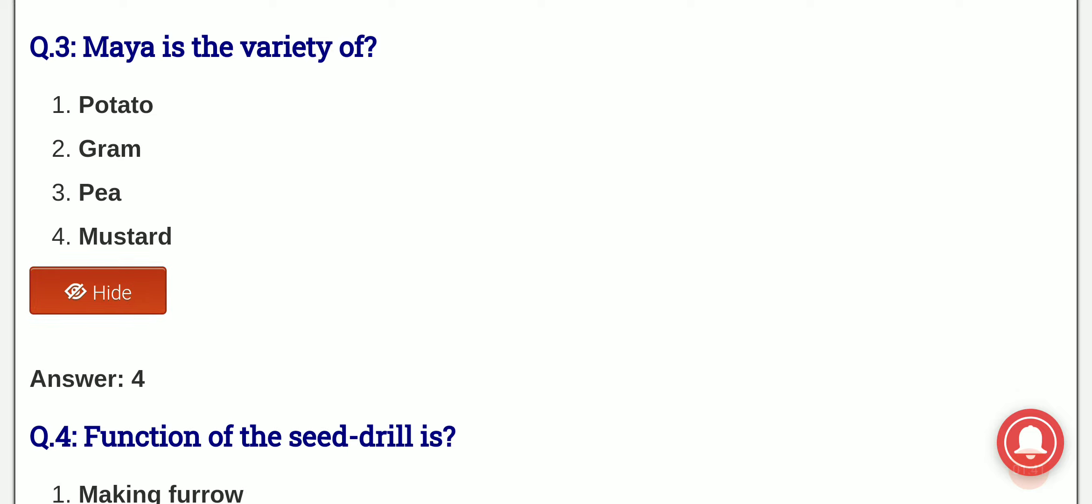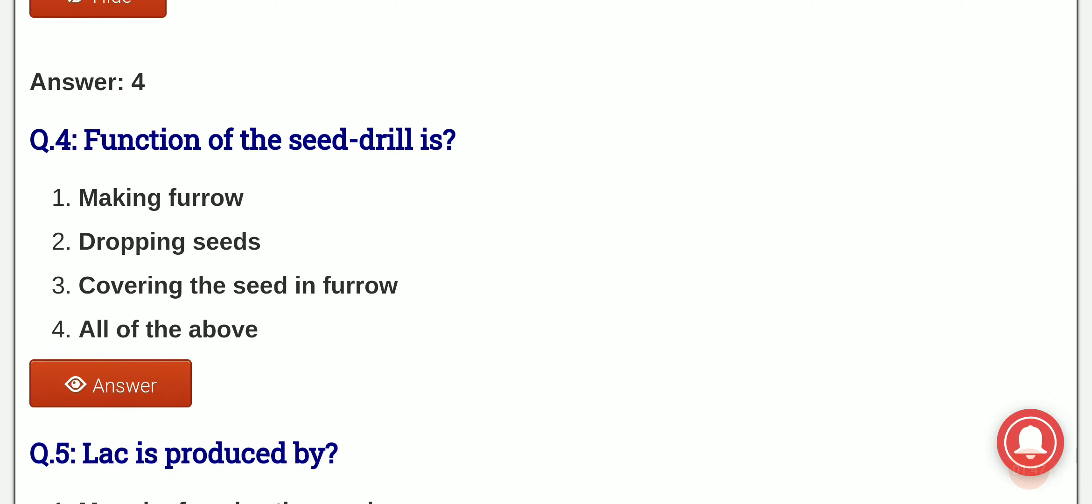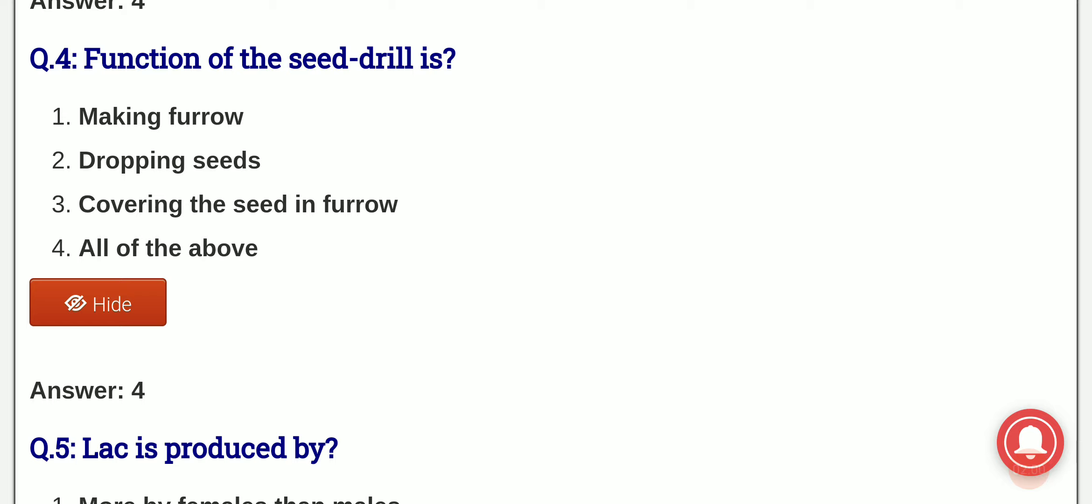Function of the seed drill: the options are making furrow, dropping seeds, covering the seed in furrow, all of the above. And the answer is option 4, that is the function of seed drill is all of the above. It makes furrow, dropping of the seeds, and also covering the seed in furrow.